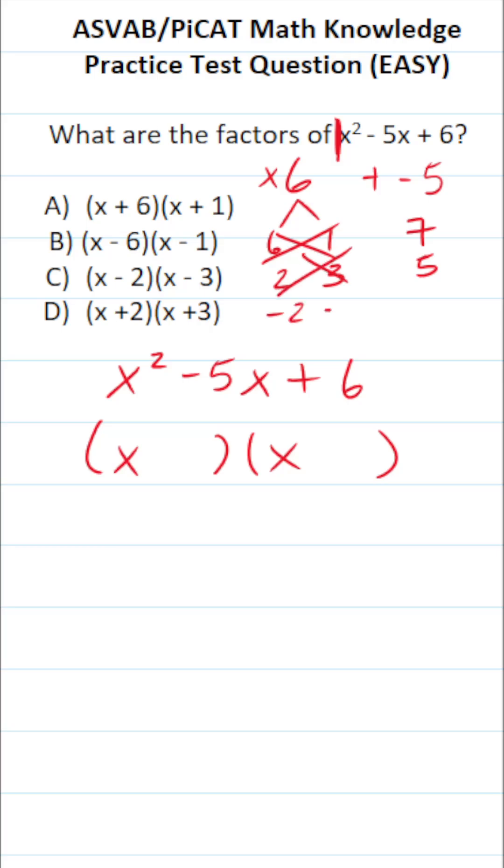What about negative 2 and negative 3? Negative 2 times negative 3, a negative times a negative, is going to be a positive. Specifically, negative 2 times negative 3 is positive 6. Negative 2 plus negative 3 is negative 5. So these two numbers meet our criteria.